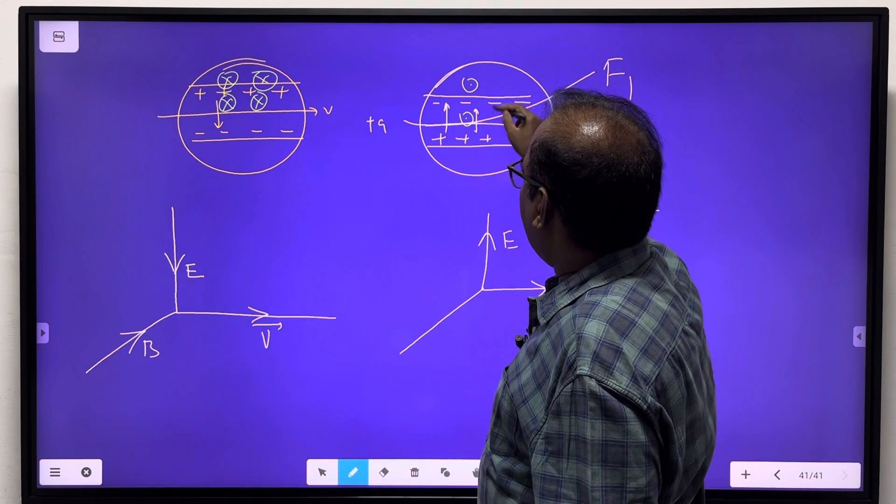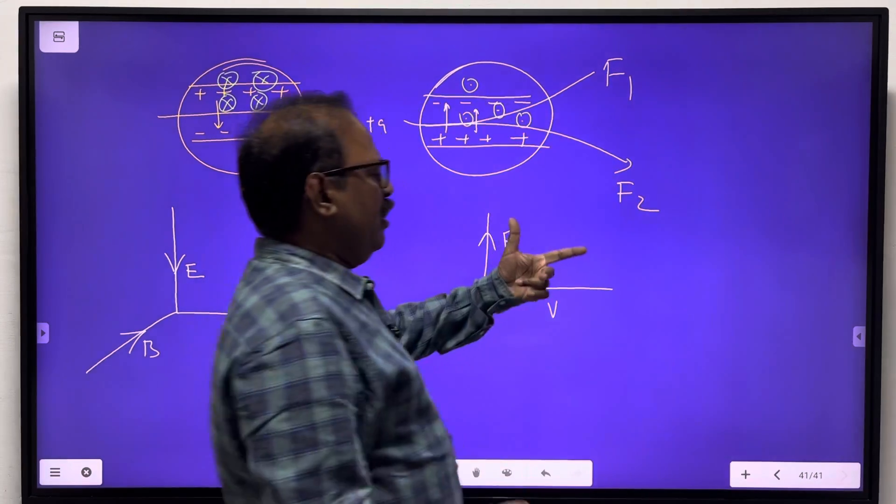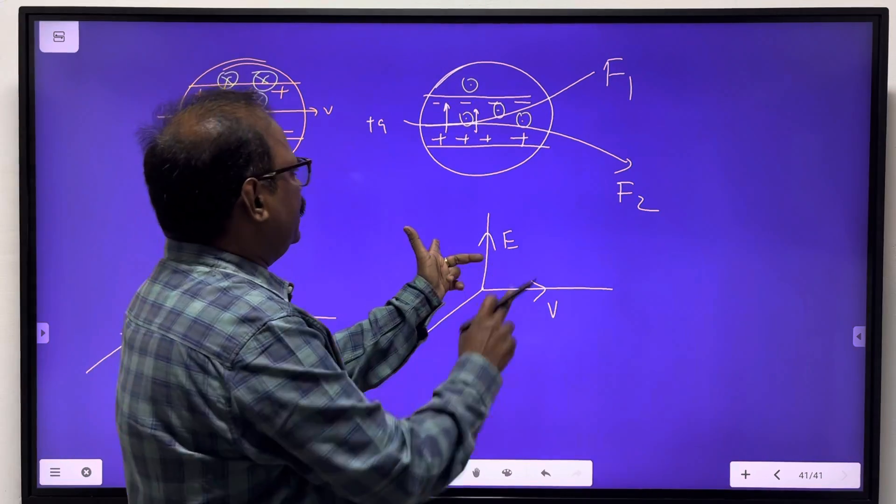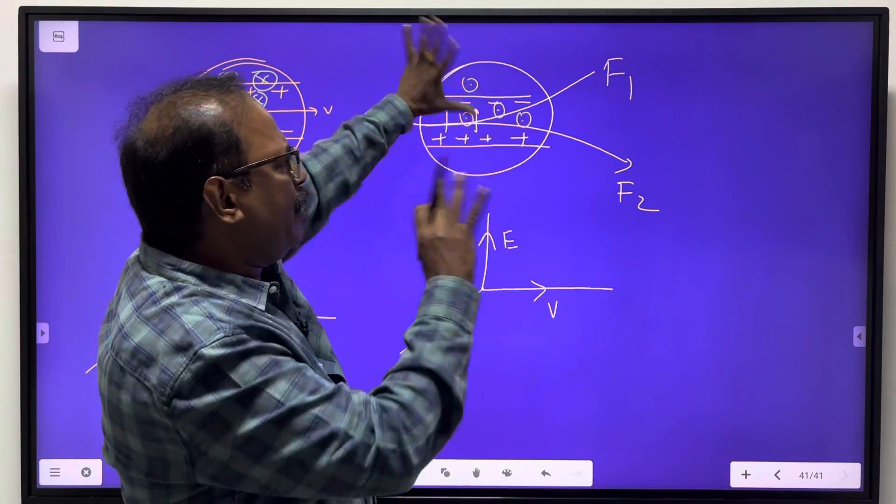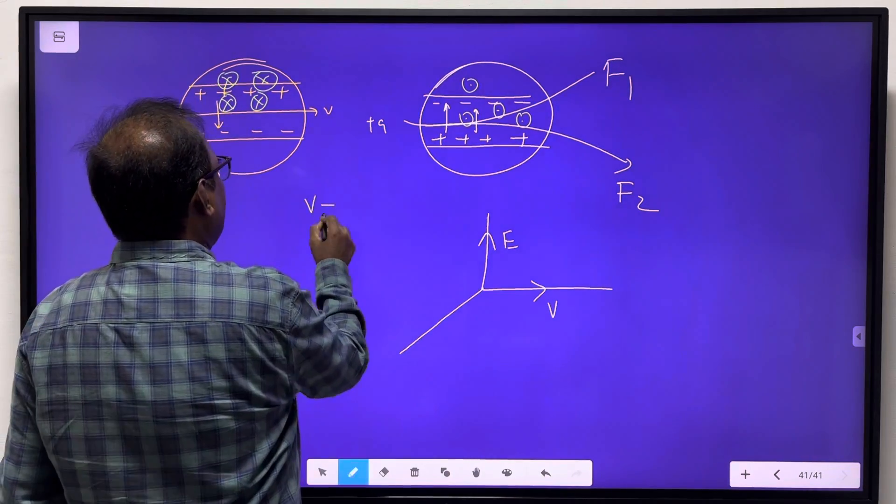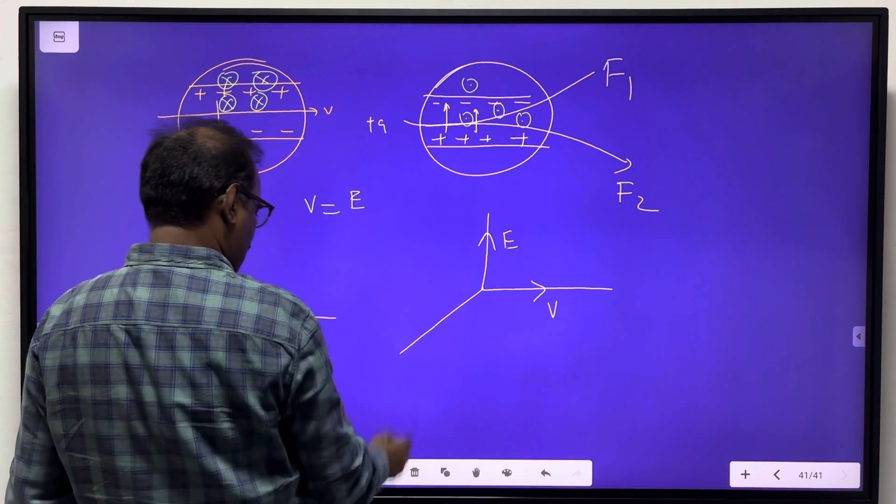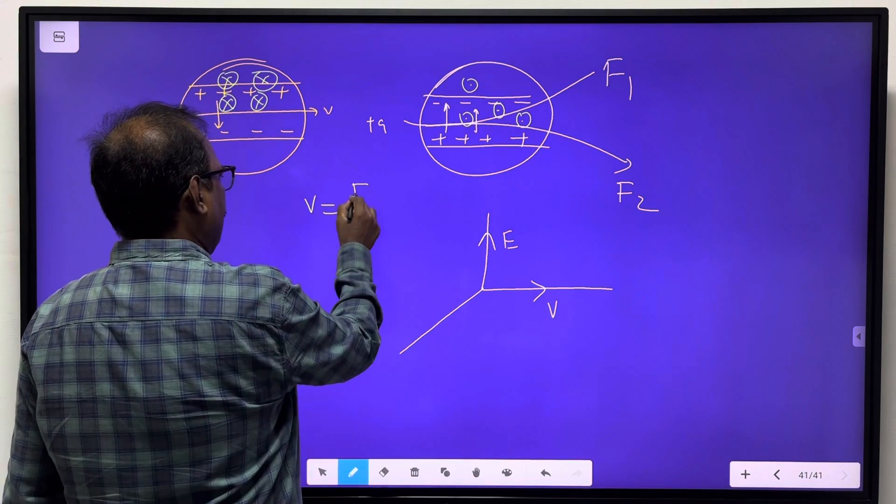If the magnetic field is coming outward, then according to Fleming's left hand rule, the force will be downwards. Okay, now we have equal and opposite forces. The magnitude of velocity is E by B.